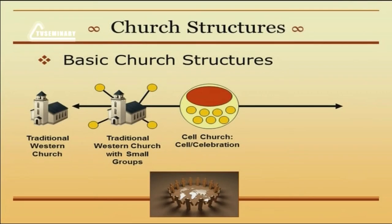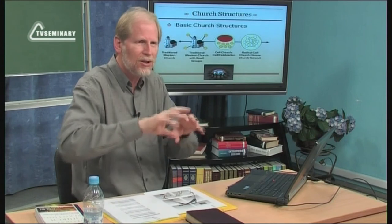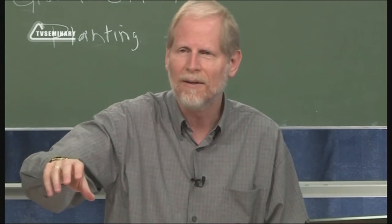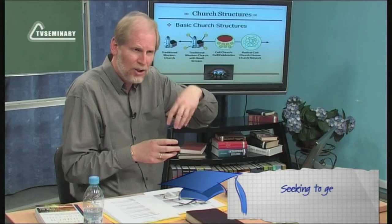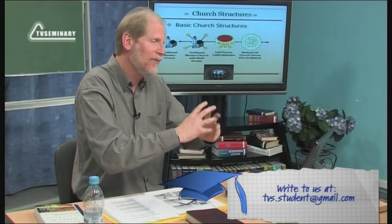Moving further along the spectrum, you get what could be called a radical cell church or house church network. This is where you may not have a centralized Sunday morning worship service at all. The life of the church is carried on in the cell groups, and you only meet together in large meetings for equipping and teaching. Worship happens in the small groups, or perhaps once a month you rent a concert hall for a big celebration service. Everything is totally decentralized into small groups, but they're networked, with an eldership and leadership giving equipping to cell group leaders.